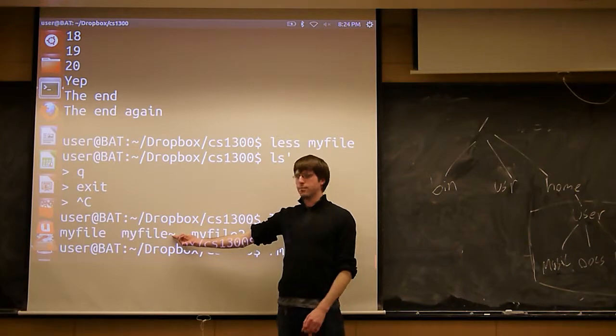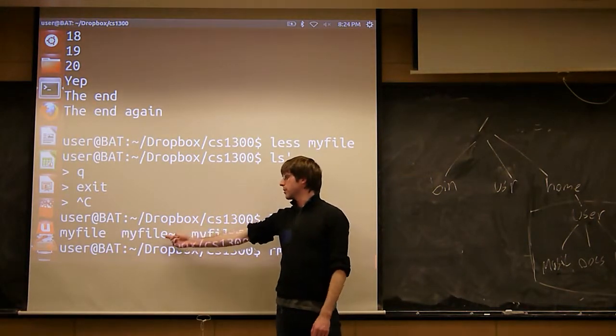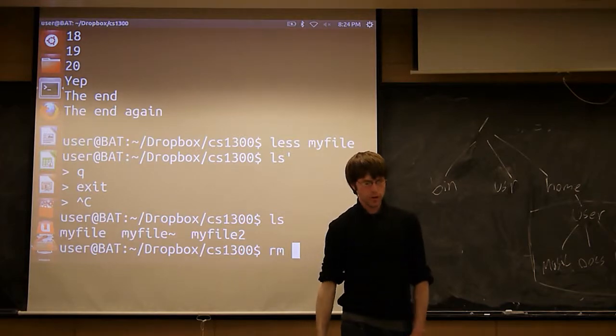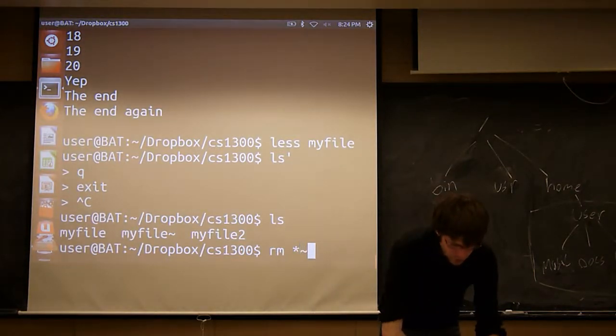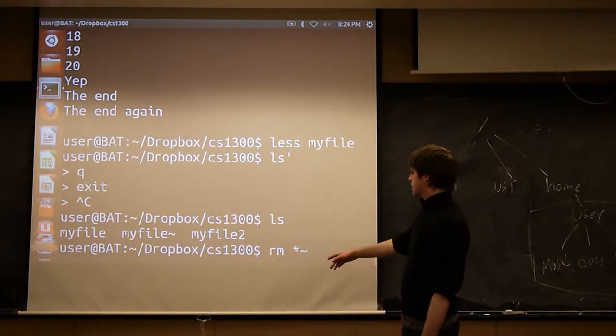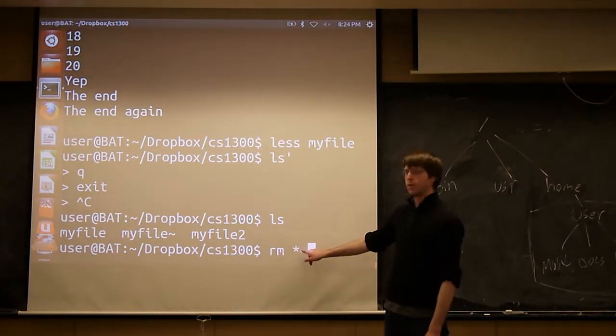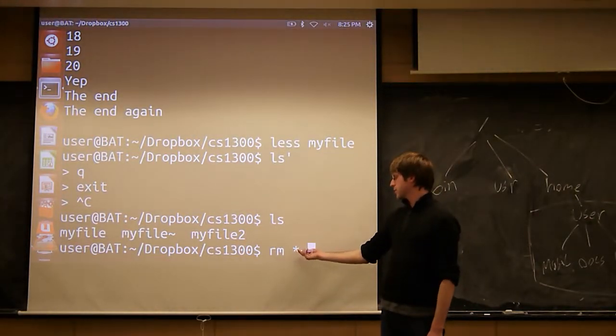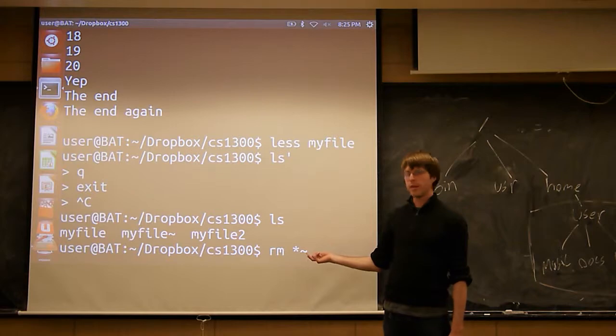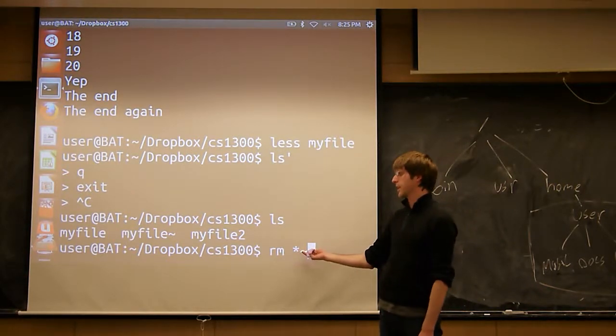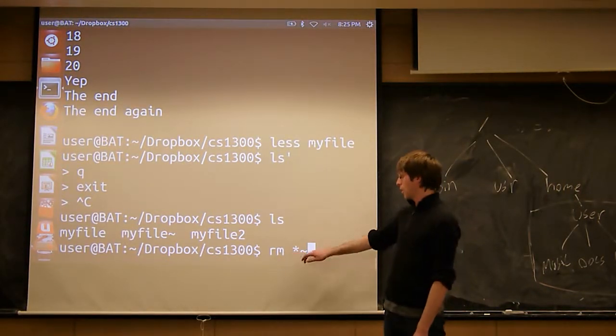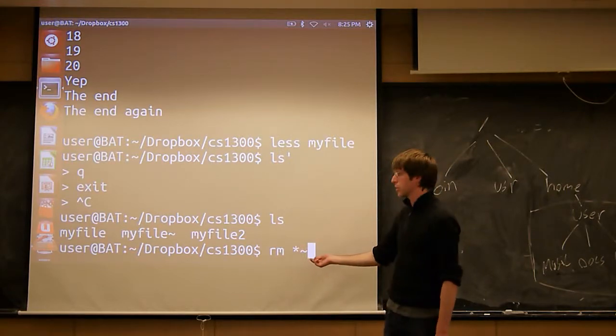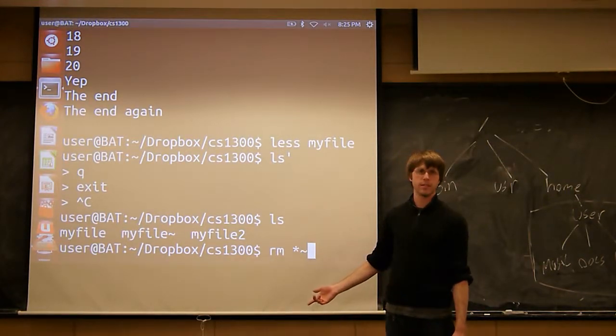I want to delete this backup file, because I have no need for it. Often there'll be a couple of these backup files in a folder. If I do rm star tilde, it's going to delete anything that ends with a tilde. So you can take the star and add other constraints to it, and then the star will just expand to anything that has a tilde after it. So rm star would delete everything, but rm star tilde is only going to delete everything that ends with a tilde. Make sense?